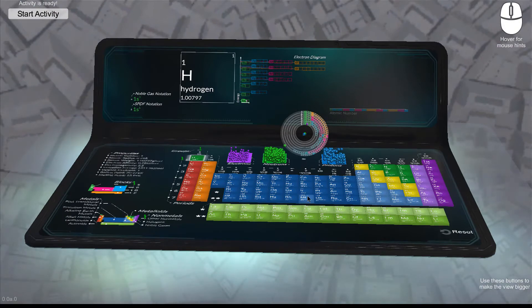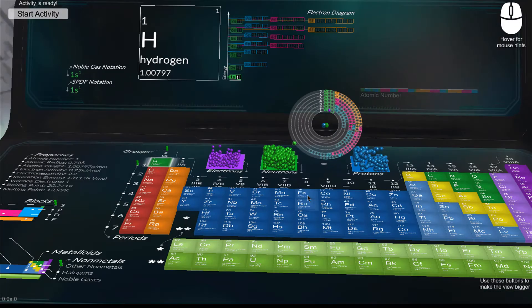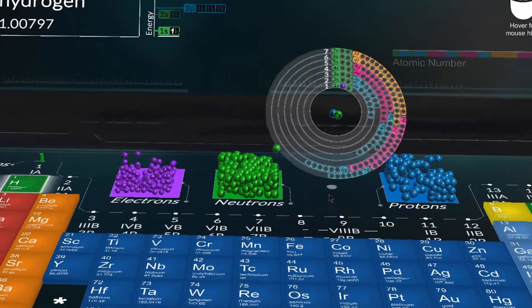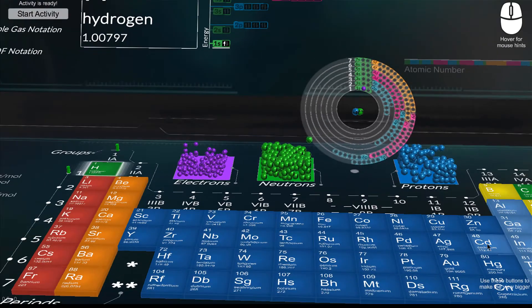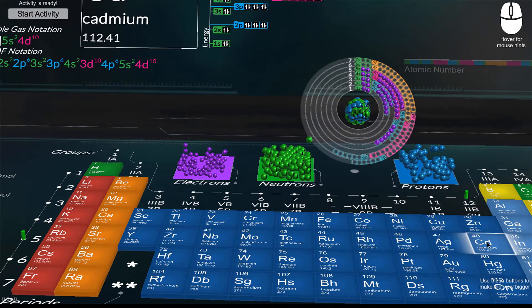The interactive periodic table allows users to examine each element at a glance. The atomic trinket shows a rendering of the elements molecule, with a spinning nucleus of protons and neutrons as well as a Bohr model of the accompanying electrons. Choose a different element and atoms will be added or removed to reflect the change.